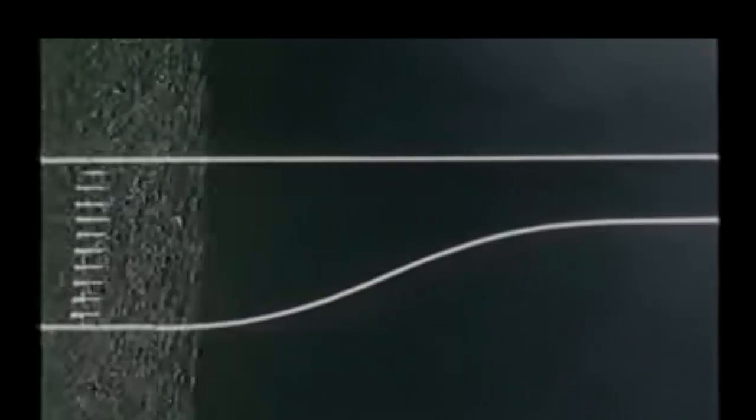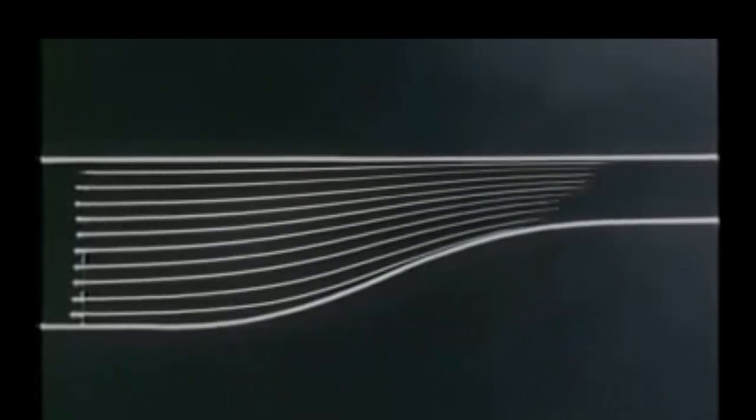Often it is useful to use multiple streak lines to observe a flow field. We can make them with the multiple finger wire you saw before. The fourth concept we need is the streamline. A streamline is defined as any line that at a given instant is everywhere tangent to the velocity vectors of the flow field.